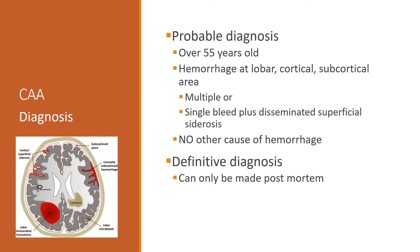To make a clinical diagnosis, the patient is usually over 55 years old with hemorrhage at the lobar cortical or subcortical area. It tends to be multiple, or it may be a single bleeding plus old or recent disseminated small bleeding. There is no other cause of hemorrhage found. However, a definitive diagnosis can only be made post-mortem.